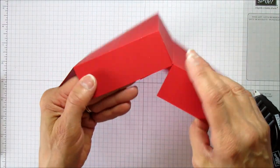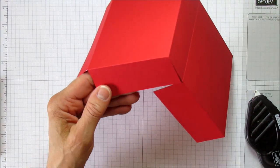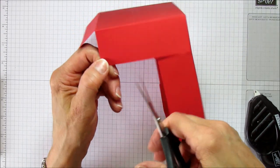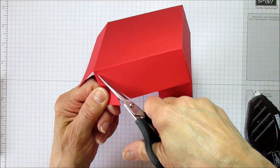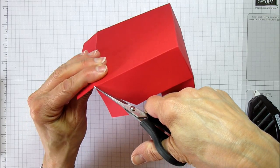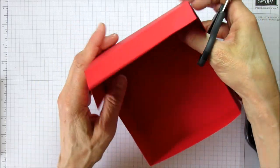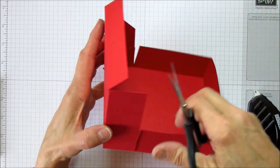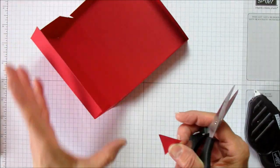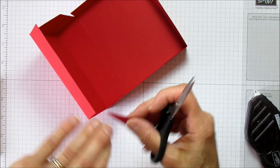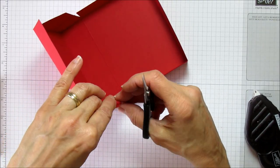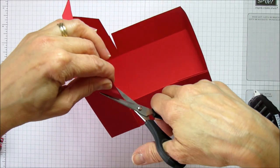What I did was on the side that will fold down, I just went ahead and cut a little triangle to that corner there. It just looks better to me.